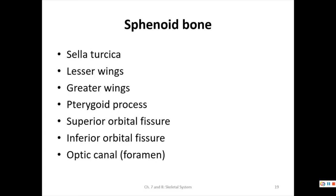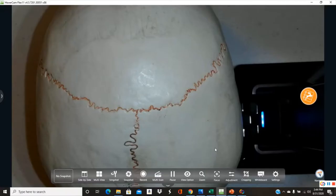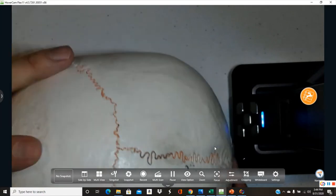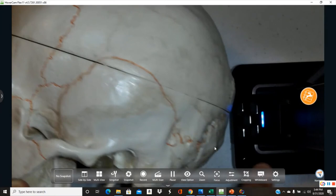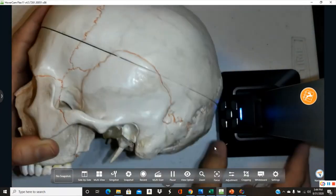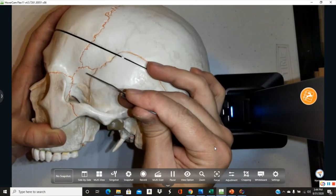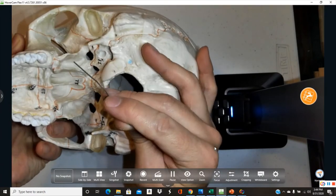Next is the sphenoid bone, which we'll see in several views. Structures to find include the sella turcica, lesser and greater wings, pterygoid processes, superior and inferior orbital fissures, and the optic canal or foramen. The sphenoid can be seen on the side of the skull, and extends further downward.